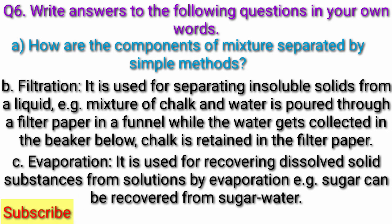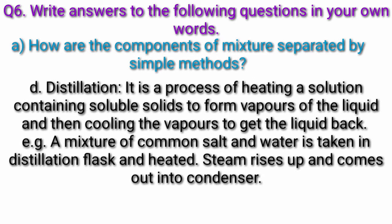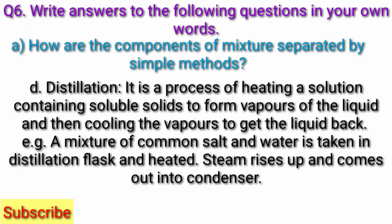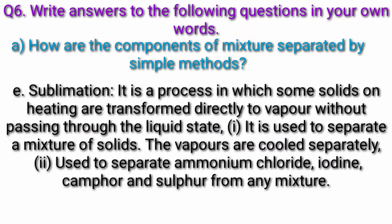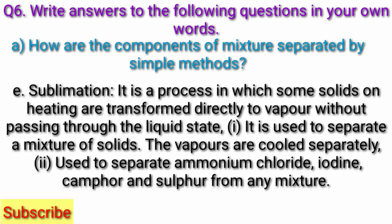C. Evaporation: It is used for recovering dissolved solid substances. D. Distillation: It is a process of heating a solution containing soluble solids to form vapors of the liquid and then cooling the vapors to get the liquid back. A mixture of common salt and water is taken in a distillation flask and heated. Steam rises up and comes out into the condenser. E. Sublimation: It is a process in which some solids on heating are transformed directly to vapors without passing through the liquid state. It is used to separate a mixture of solids, and the vapors are cooled separately. It is used to separate ammonium chloride, iodine, camphor, and sulfur from any mixture.